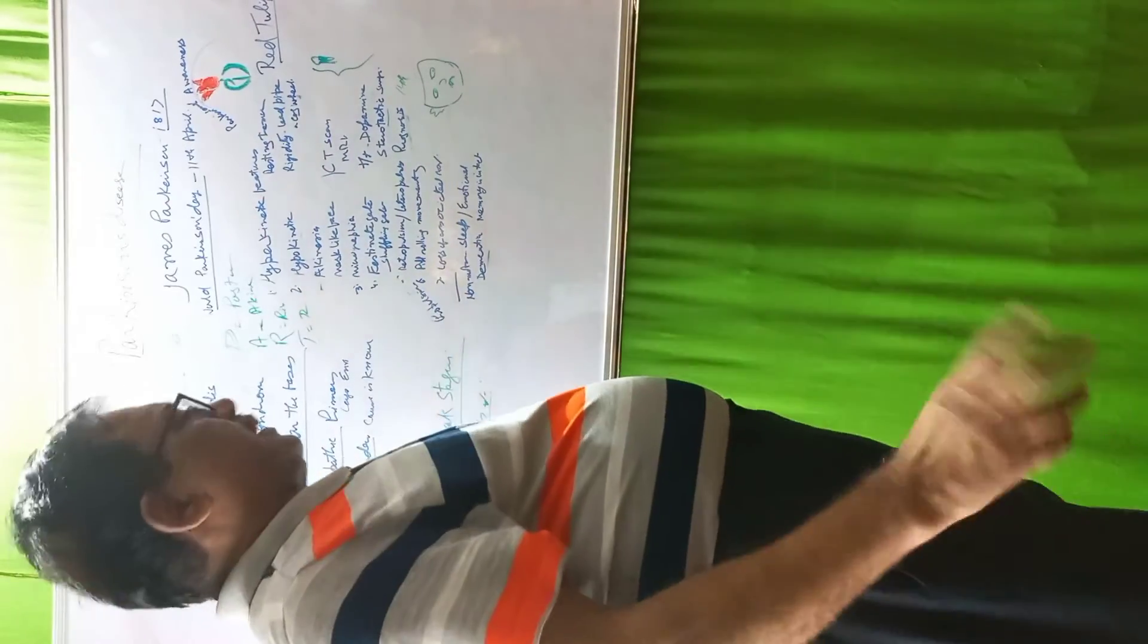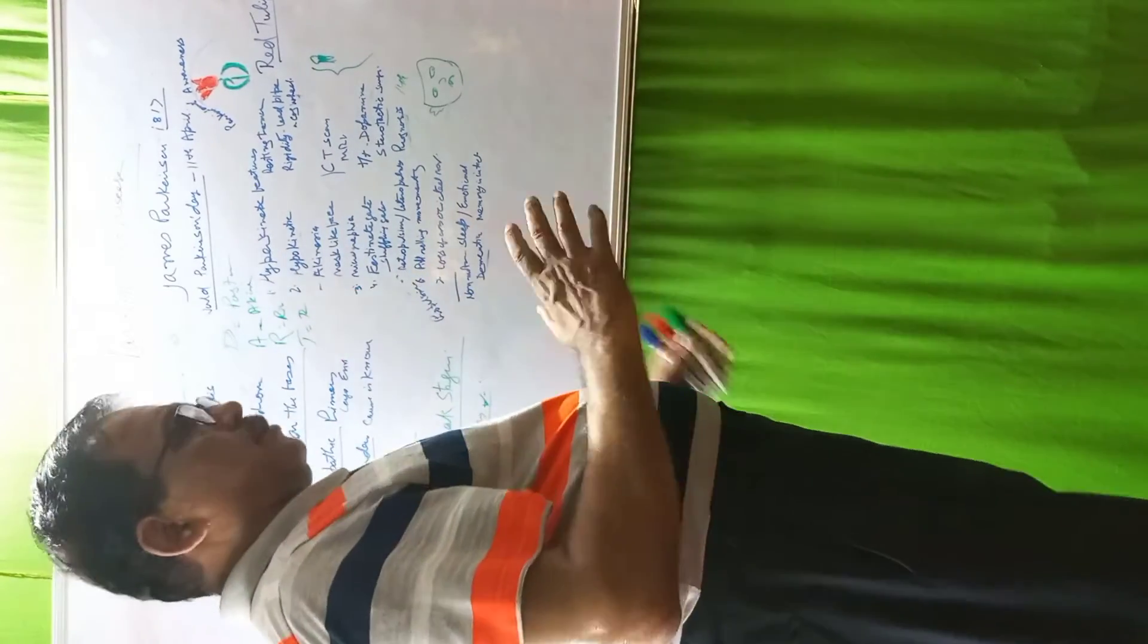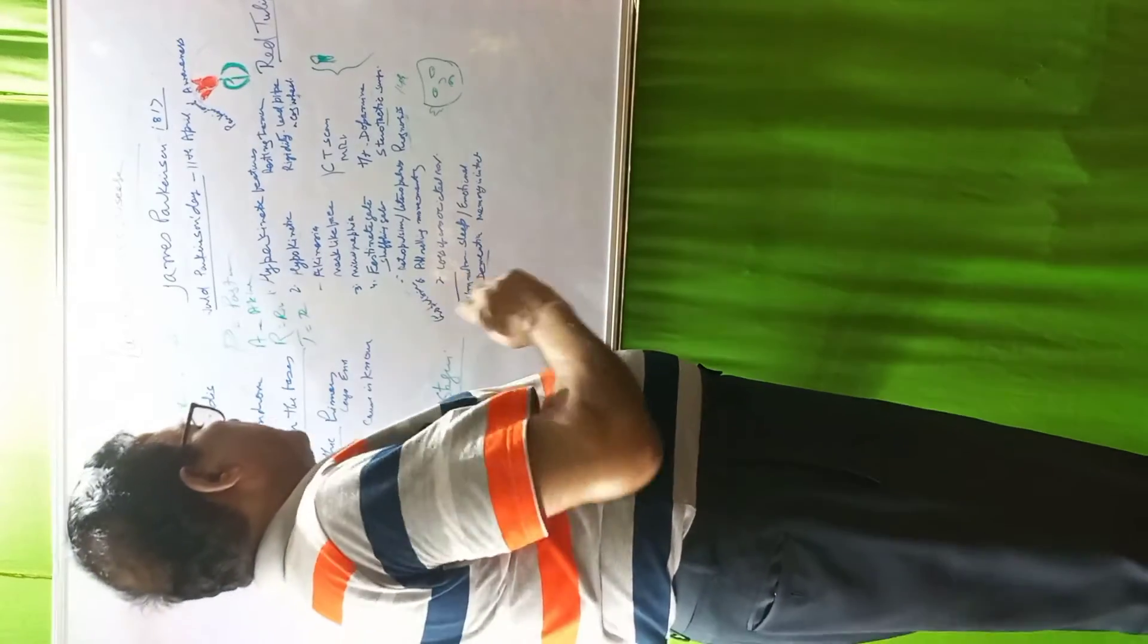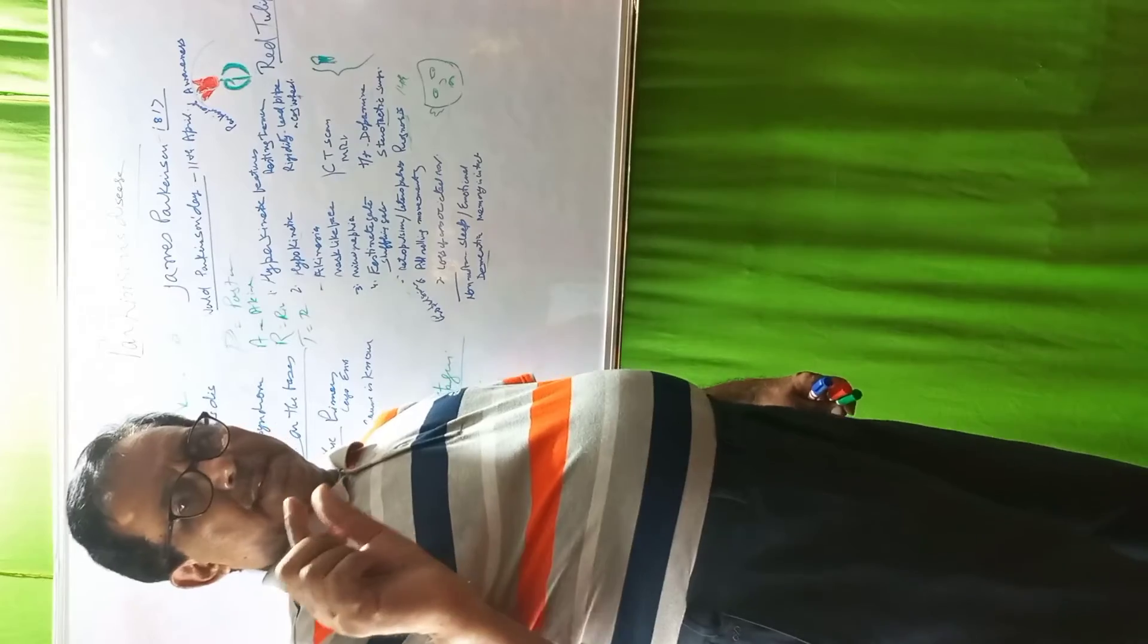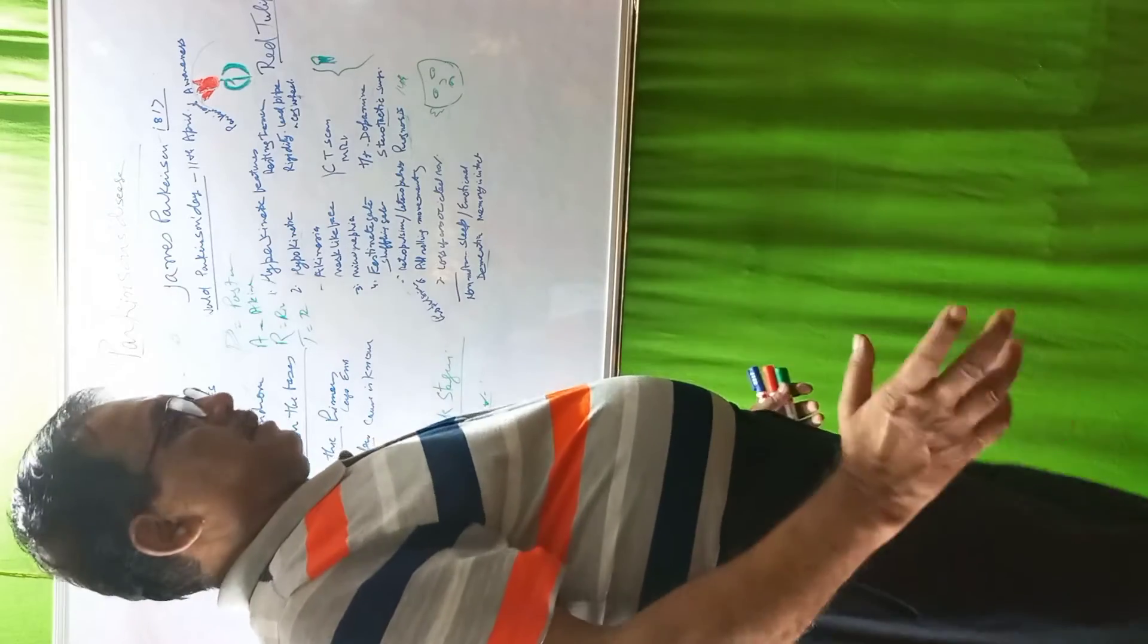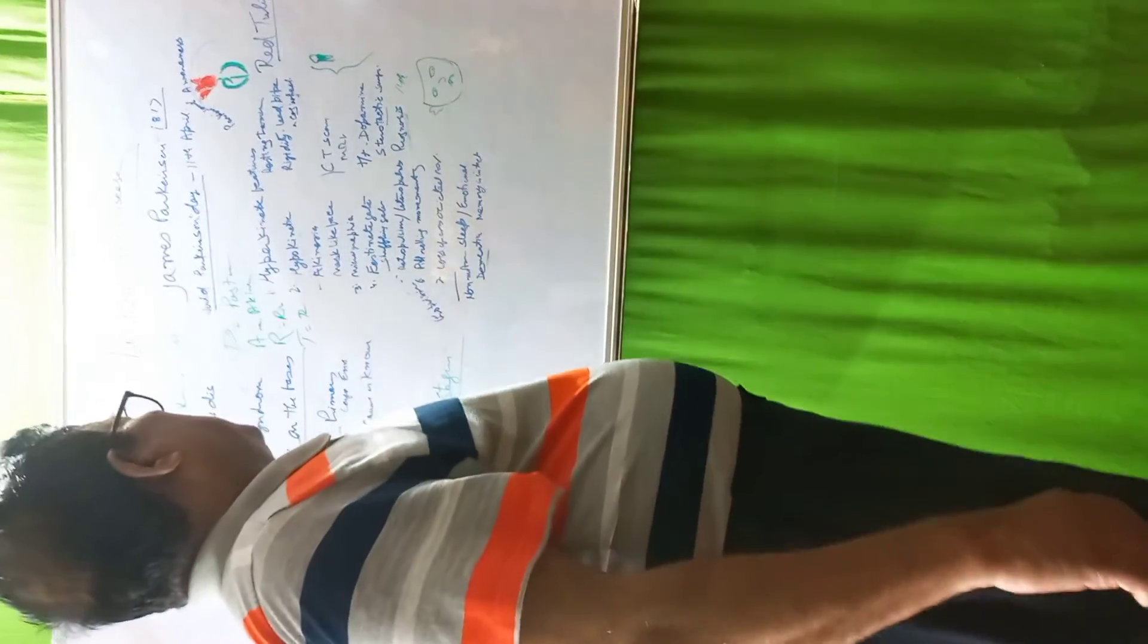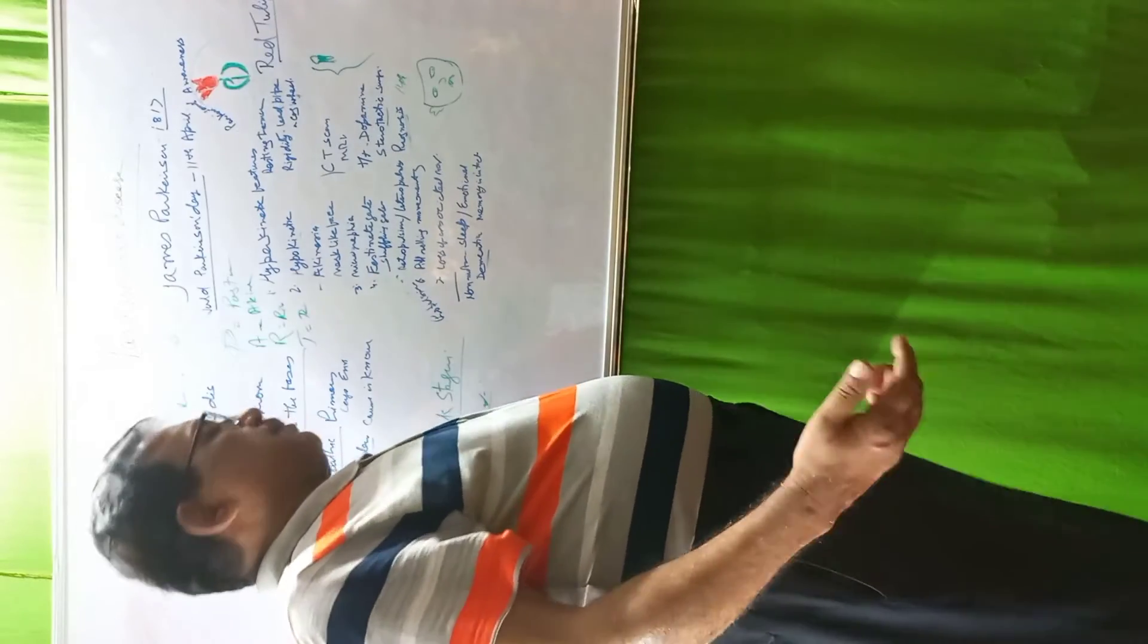Hypokinetic feature is akinesia. This explains mask-like face: there is no expression. Then micrographia: small writing. Writing will become small. Then there is festinating gait and shuffling gait.